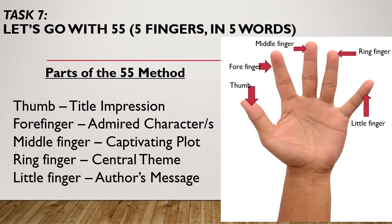Now, let's proceed to Task 7 — the Five-Five Method: five fingers in five words. The thumb represents Title Impression. The four finger represents Admired Characters. The middle finger represents Captivating Plot. The ring finger represents Central Theme. And the little finger represents Author's Message. Let us see how you fare with this.